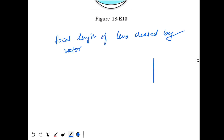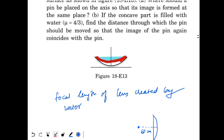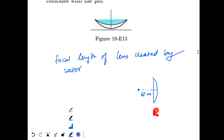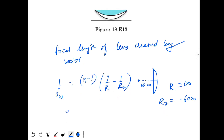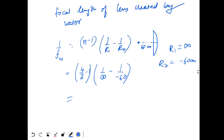First, we find the focal length of the lens created by the water. This water lens has one flat surface and one curved surface. The curved surface has radius 60 cm. So R2 = minus 60 cm and R1 = infinity. Using the lens maker's formula: 1/Fw = (4/3 − 1)(1/∞ − 1/(−60)) = (1/3)(1/60) = 1/180. So Fw = 180 cm.